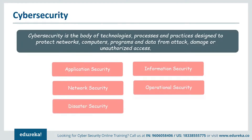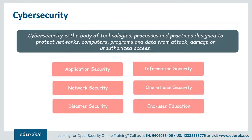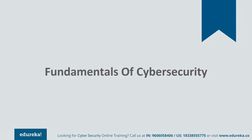Then there is disaster recovery and business continuity, which define how an organization responds to a cyber security incident or any event that causes loss of operations and data. And finally, the most important thing: end user education. It addresses the most unpredictable cyber security factor — people. Teaching users to delete suspicious email attachments, not plug in unidentified USB drives, and other important lessons is very vital for the security of any organization.